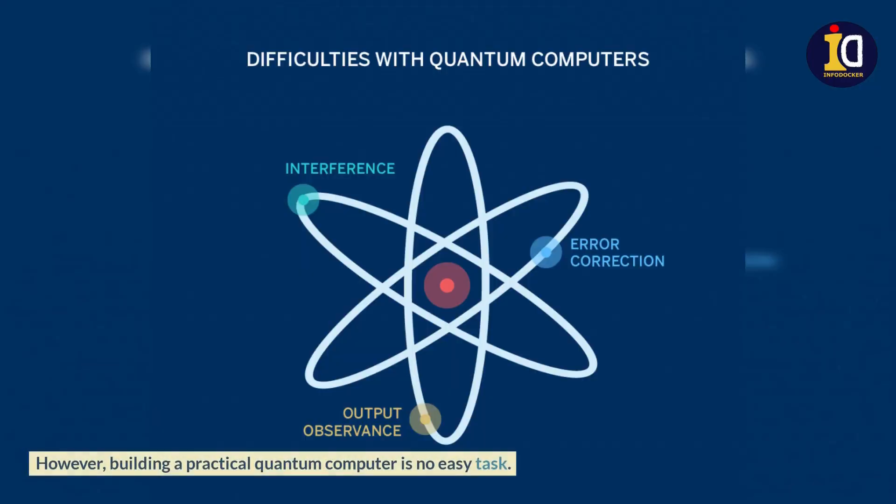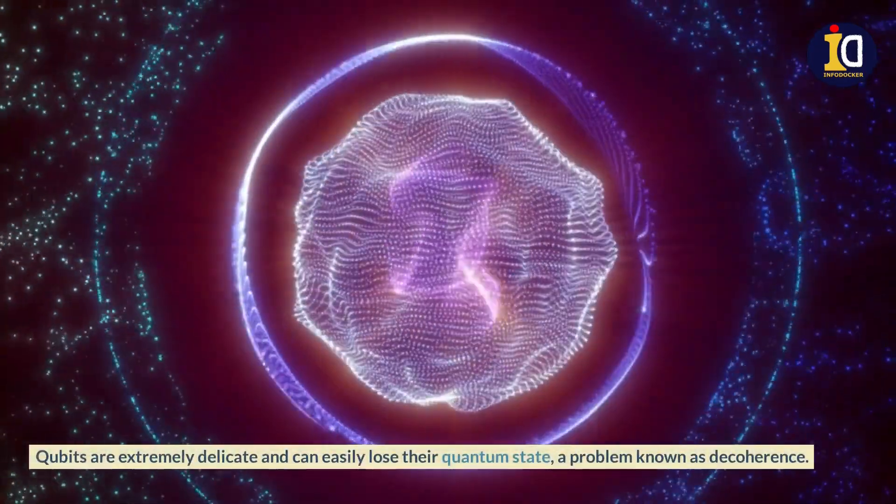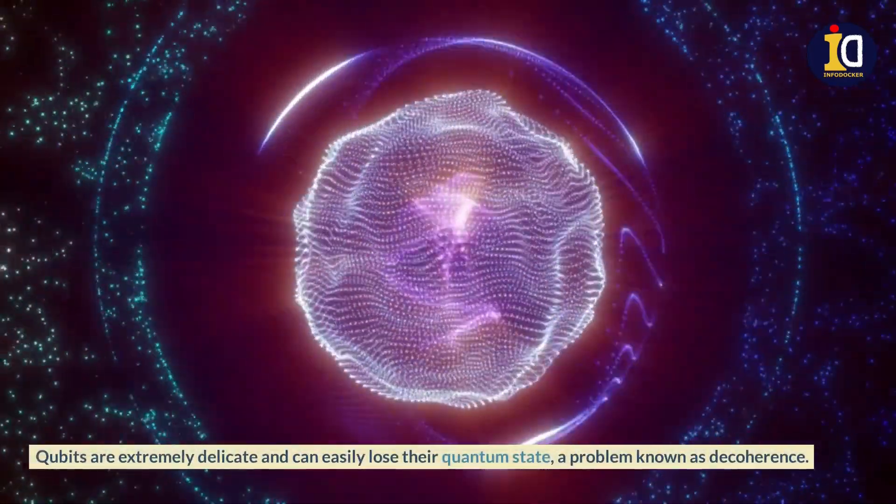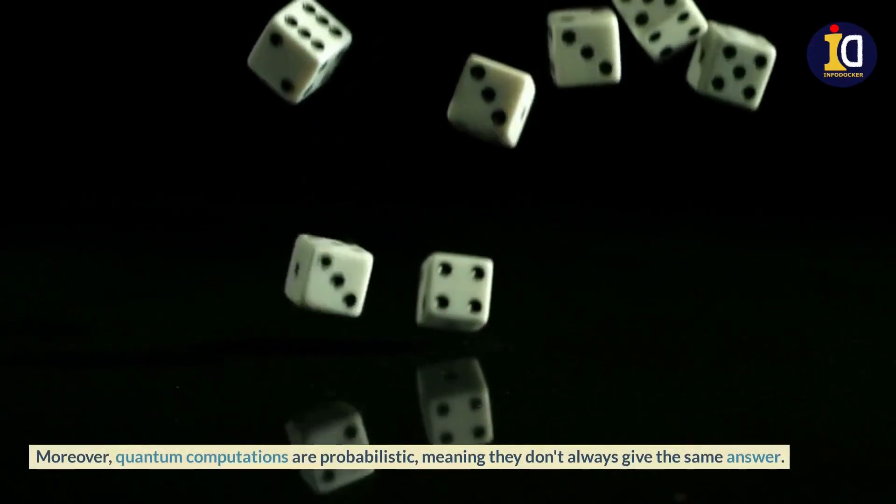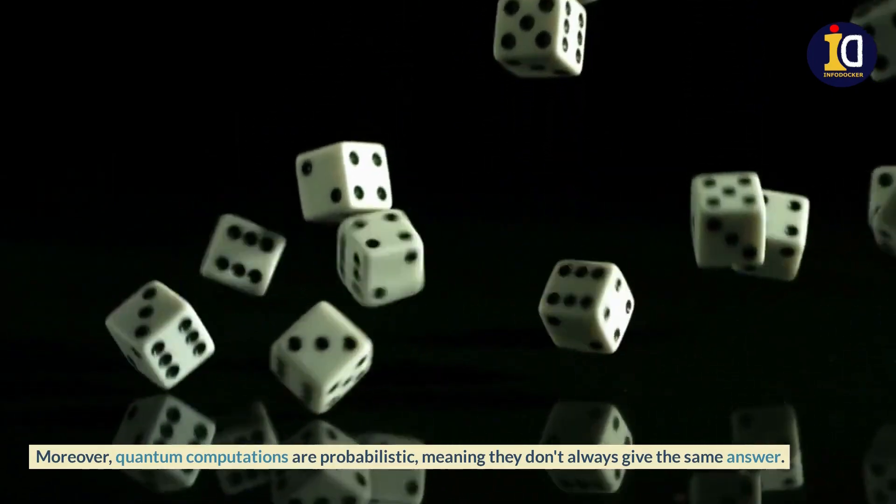However, building a practical quantum computer is no easy task. Qubits are extremely delicate and can easily lose their quantum state, a problem known as decoherence. Moreover, quantum computations are probabilistic, meaning they don't always give the same answer.